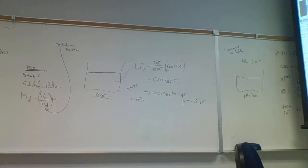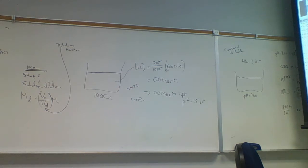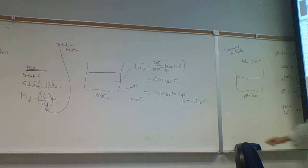Hypochlorous acid could work, though it's pushing it with 8.9 × 10⁻⁸. Dihydrogen phosphate H₂PO₄⁻ looks like a good candidate — it's common and cheap. Its Ka equals 6.3 × 10⁻⁸, which is close to 10⁻⁷, so let's use that.